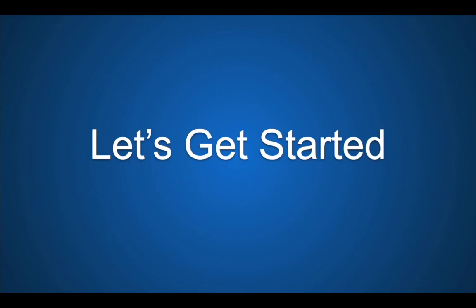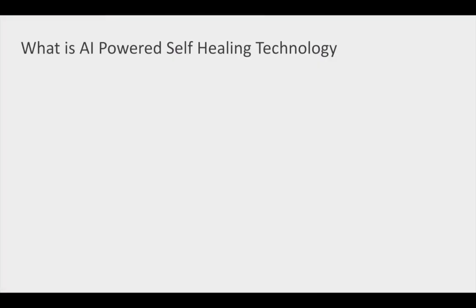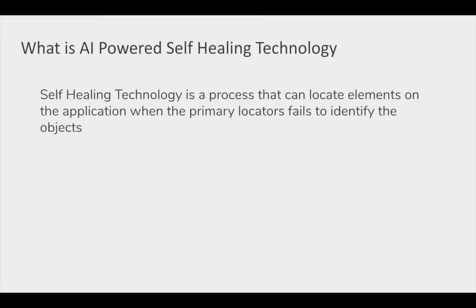Let's get started and let us first see what exactly is the AI powered self healing technology. In TestProject, we now have a technology or a process that can help you in case there are any changes in the locators of your objects. This is a very common scenario while doing test automation — that the locators change, the properties of the objects change, or we use dynamic object properties. So with every run, there are chances of failures, and then we have to invest a lot of time and effort in correcting all these locators and properties.